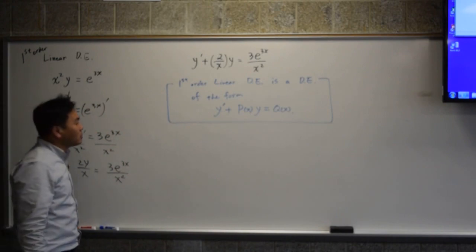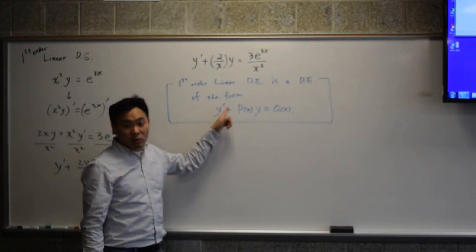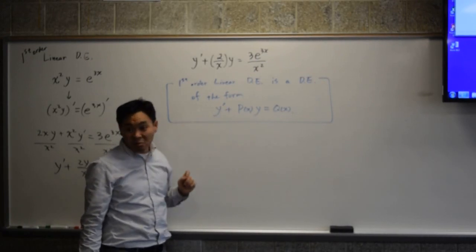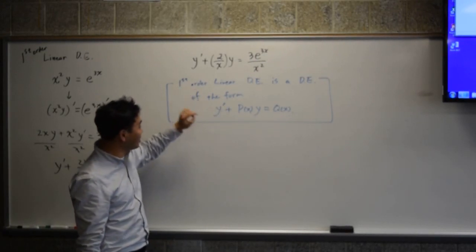If you have any differential equation that can be put in this form, you call this a first-order linear differential equation. It's first order because you only see one derivative.